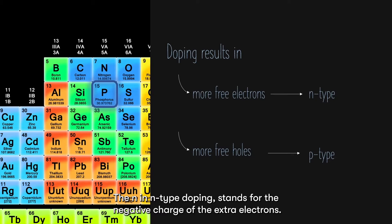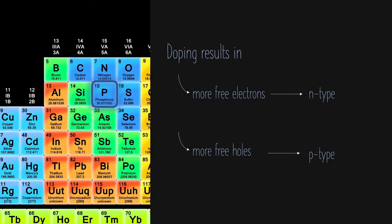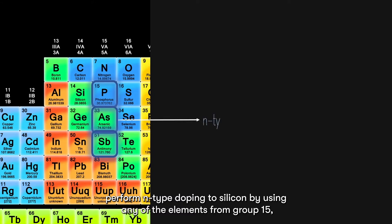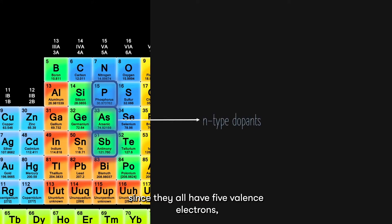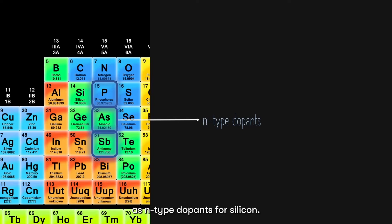The n in n-type doping stands for the negative charge of the extra electrons. The p in p-type doping stands for the positive charge of the extra holes. We can perform n-type doping to silicon by using any of the elements from group 15, since they all have five valence electrons, which is one more than silicon. Phosphorus, arsenic, and antimony are commonly used as n-type dopants for silicon.